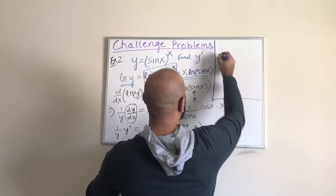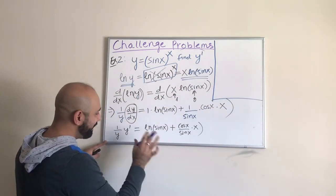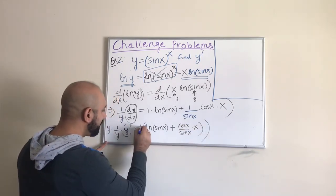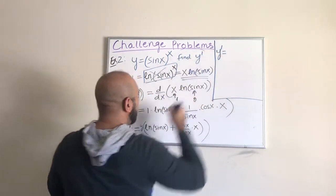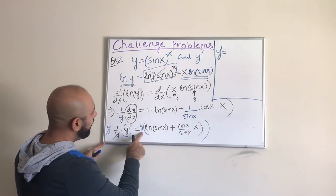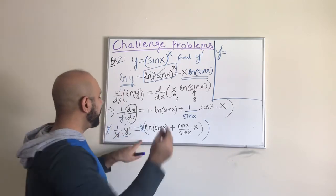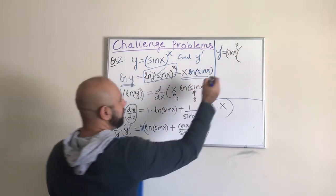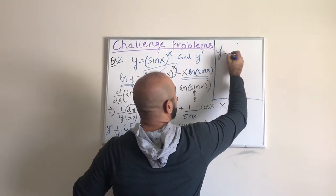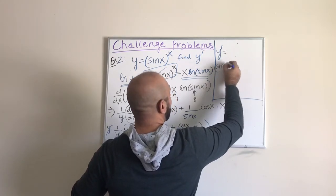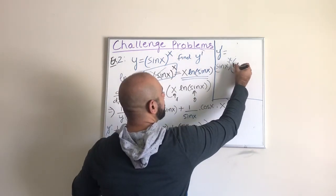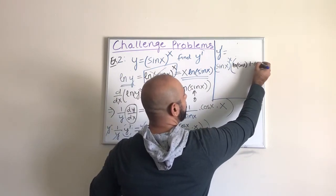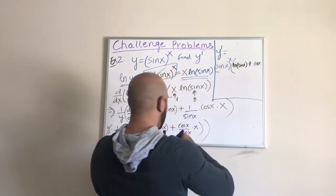Now we want y-prime by itself, so we multiply both sides by y. The y's cancel on the left, leaving just y-prime. On the right we have y times the whole expression. Since y is already given as sin(x)^x, we substitute it in. The final expression is y-prime equals sin(x)^x times the quantity ln(sin(x)) plus x·cot(x).